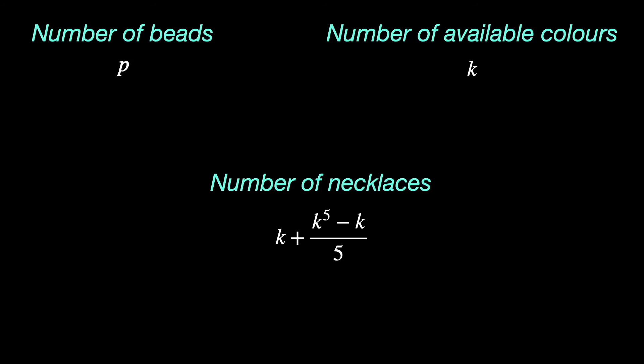Our count of necklaces is thus correct for five beads and indeed for any prime number P of beads. With P beads and K available colors, the only repeating necklaces are monochromatic, K in number, and the non-repeating necklaces come in groups of size P. And so there are K to the power of P minus K over P of such groups.